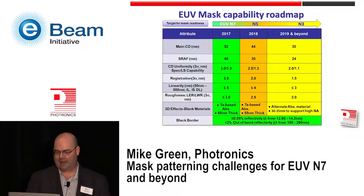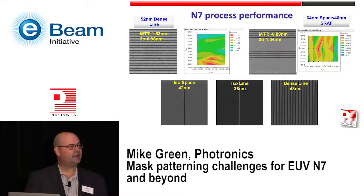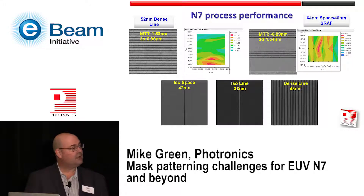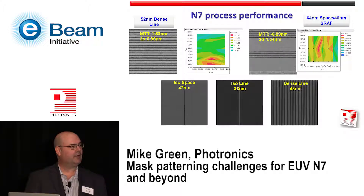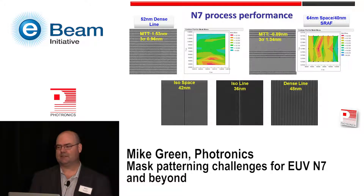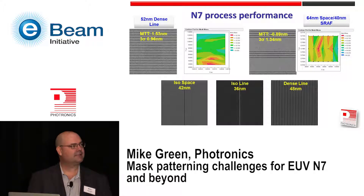A quick recap of current N7 performance: this is an N7 class mask with a 52 nanometer dense line, around a 1.5 nanometer MTT, a 3-sigma of around 1. A 64 nanometer space with a 40 nanometer SRAF — which may or may not actually resolve at 7 nanometer — MTT of less than one, and 3-sigma of around 1.3. Minimum feature resolution numbers: ISO space of 42 nanometer, ISO line of 36 nanometer, and dense line of 48 nanometer. This is a legacy process rolled over from the ArF regime and should be acceptable for the 7 nanometer node in terms of basic patterning.